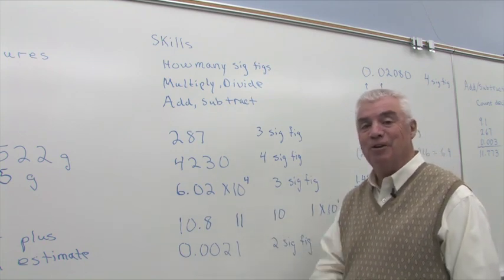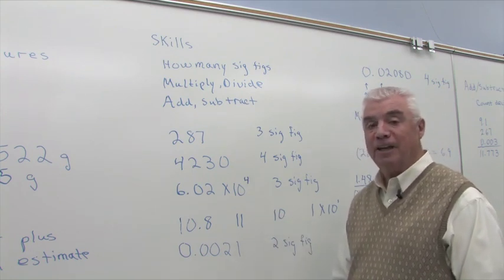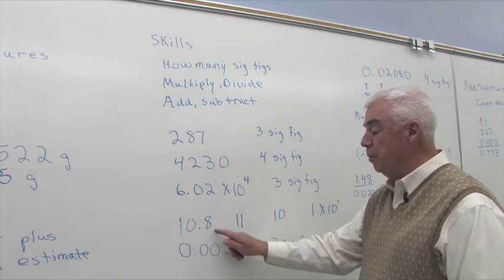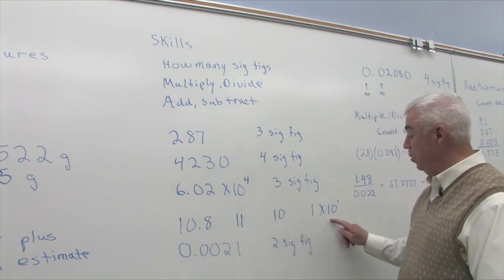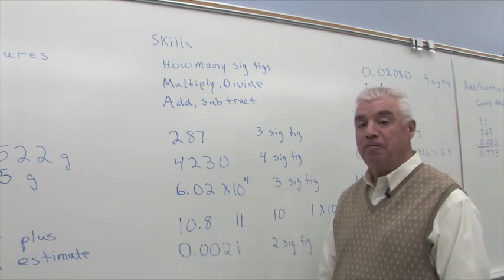But that's still two significant figures because this trailing zero is significant. Well, the way that you'll have to express this number to one significant figure is to use scientific notation, 1 times 10 to the 1 would be one significant figure.